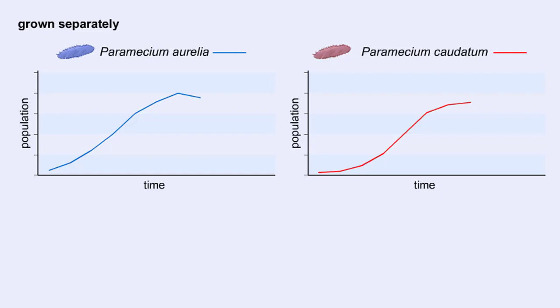at least until their food source runs out. However, we can raise both species in the same environment and see what happens. Notice that P. aurelia starts out with a slow growth rate, but it eventually outcompetes P. caudatum, whose population eventually declines.